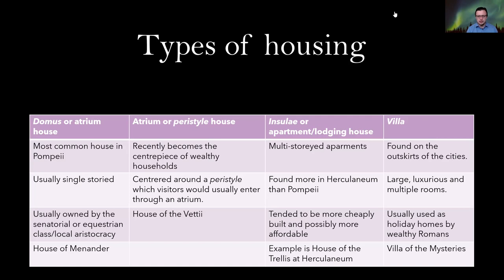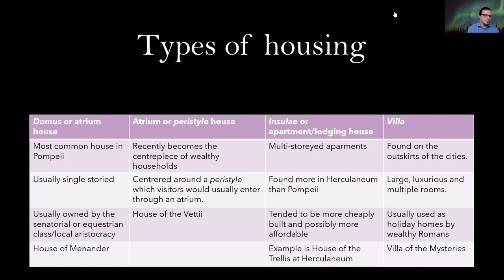The domus is usually single storey and owned by the senatorial or equestrian class, or local aristocracy. It's quite interesting that the most common house in Pompeii is owned by quite a high social status, which tells you that most people living in Pompeii were probably of a better social class. To have a house during this time period you actually had to be relatively wealthy. Most poorer people are going to be living in apartment or lodging houses and communal spaces. A really good example of the domus or atrium house is the House of Menander.